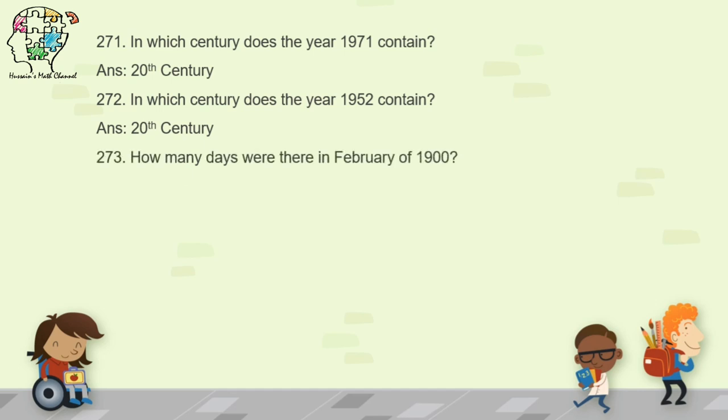Question 273: how many days were there in February 1900? First check whether 1900 was a leap year. Because 1900 ends in double zeros, you must divide by 400. Since there is a remainder, 1900 was not a leap year, so February 1900 had only 28 days.